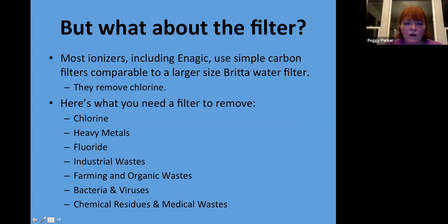You say, well, what about the filter in the Enagic machine? Does it not take care of it? Well, most ionizers, including Enagic, use a simple carbon filter that's comparable to a larger size Brita water filter. They're just carbon. They remove chlorine and some particles very effectively. But here's what you actually need a filter to remove: chlorine, heavy metals, fluoride, industrial waste, farming and organic waste, bacteria and viruses, chemical residues and medical waste. The impregnated silver in your Enagic filter does help with some bacteria and viruses, but it does not handle the rest of these things.